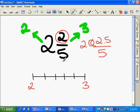1 fifth, 2 fifths, 3 fifths, and 4 fifths. And so 2 and 2 fifths is right here on the number line.